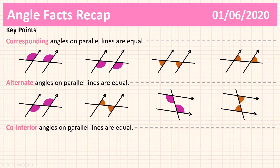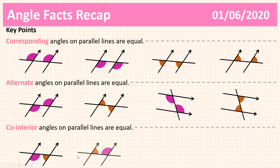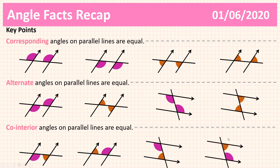Co-interior angles on parallel lines sum to 180 degrees. Co-interior angles are both interior to the parallel lines — hence the word co-interior — and they are on the same side of the transversal. We can see from the diagrams that co-interior angles always sum to 180.